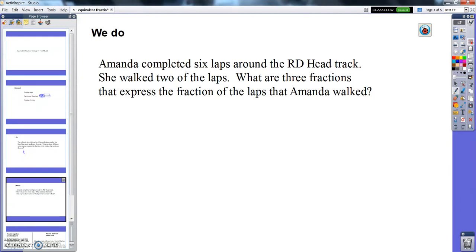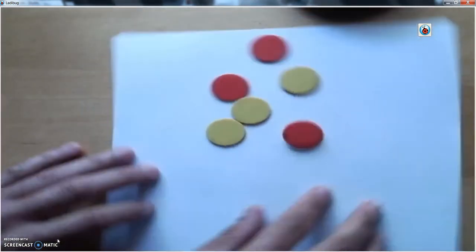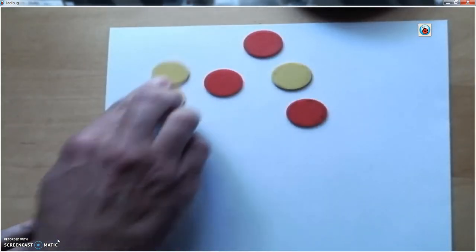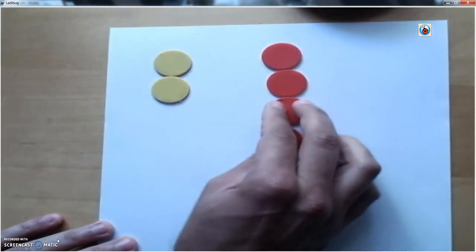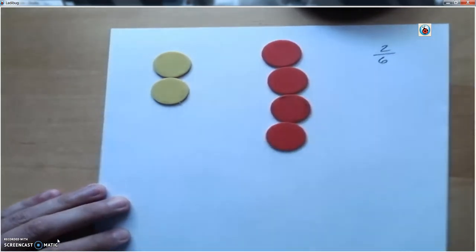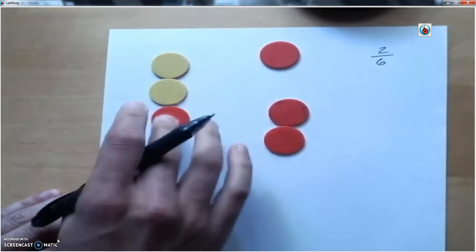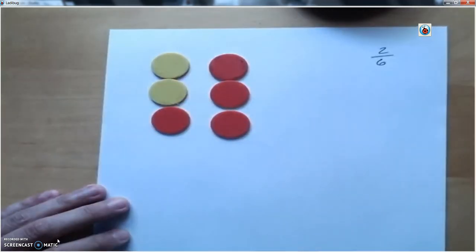Let me show it to you before you write it down. So I need six laps: one, two, three, four, five, six. I need one color to represent walking. I'll do, how about she walked two and we'll assume she ran four. So I can see my two sixths there, two yellow out of six total. If I arrange them, I'm going to try to arrange them in a way that I can easily see another fraction. So this doesn't really help me, but if I arrange them like this, now I see groups, I see even groups of two.